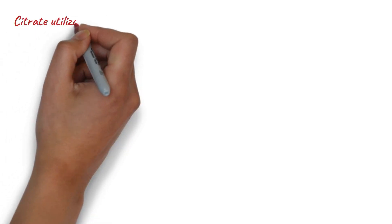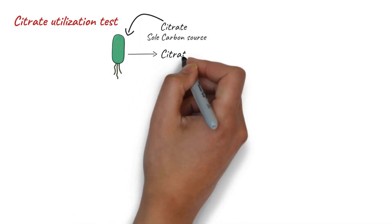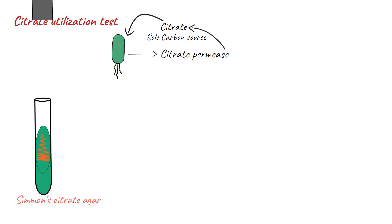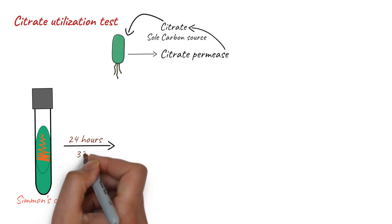The purpose of the citrate utilization test is to determine the ability of bacteria to utilize citrate as the sole carbon source. Not all bacteria are capable of utilizing citrate as the carbon source. Only those bacteria that produce citrate permease enzymes are able to utilize citrate from the surrounding environment. To perform this test, take a test tube containing Simmons citrate agar slant. Pick a loopful of culture and streak on the agar slant. Incubate for 24 hours at 37 degrees Celsius and observe for color change.